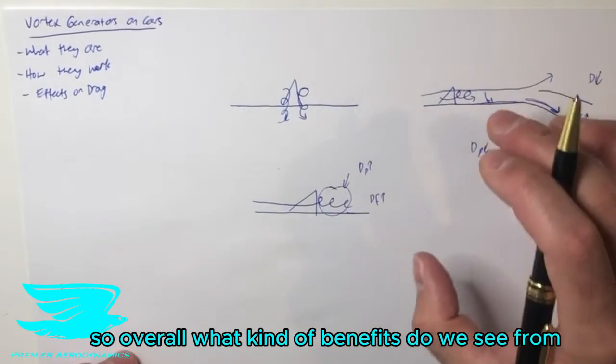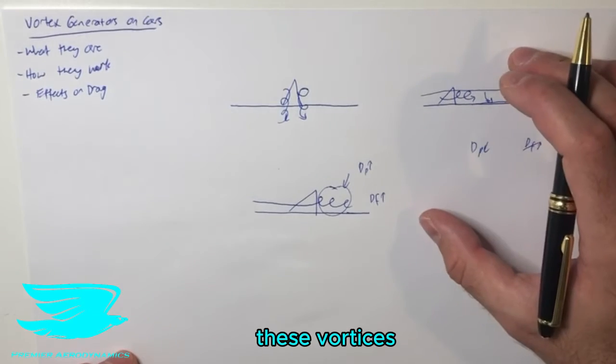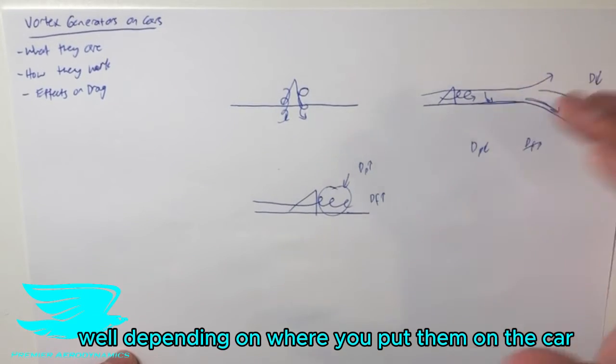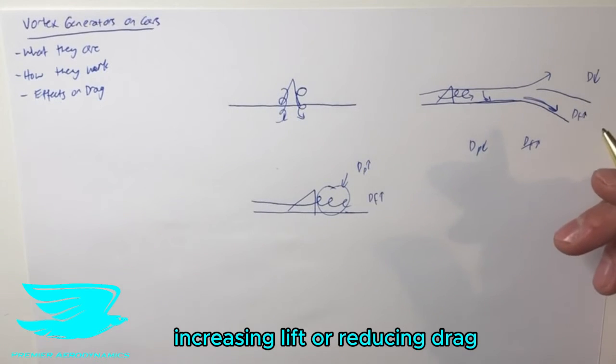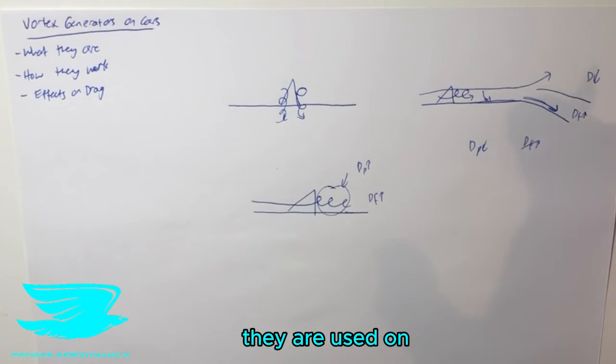So overall, what kind of benefits do we see from these vortex generators? Well, depending on where you put them on the car, they can result in a huge amount of increase in lift or reduction in drag. Generally speaking, they are used on road cars, like the cars that you buy from the shop just to drive around yourself.